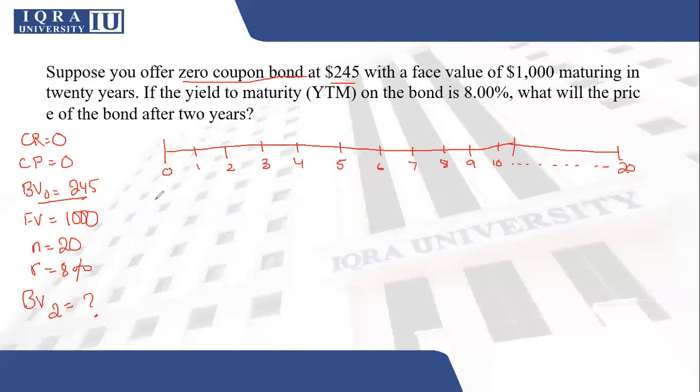So they have given you the bond price right now. They have told you that the bond price right now is $245, but they don't want the price for right now. They want the price that will be two years later. So let's put the values in our bond valuation formula and see what happens.